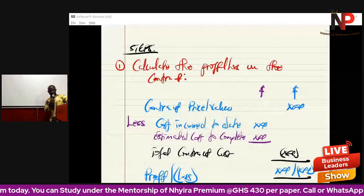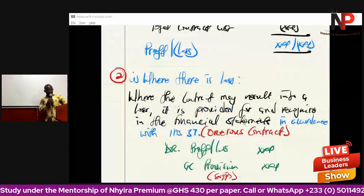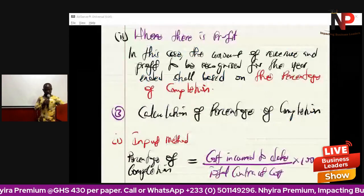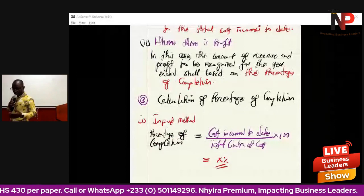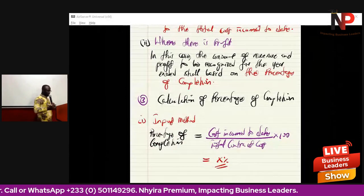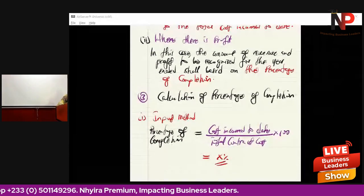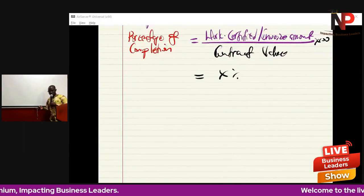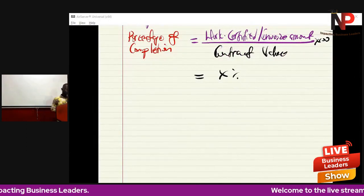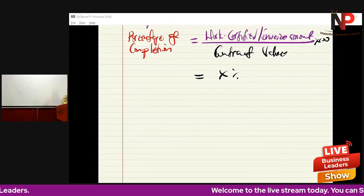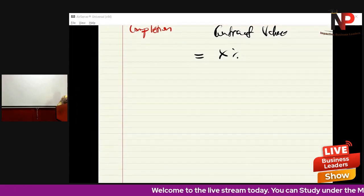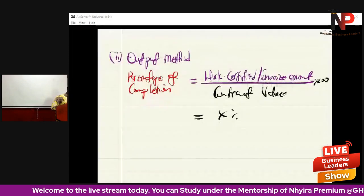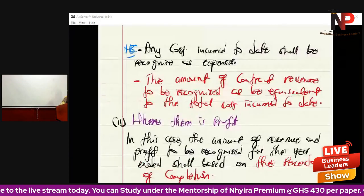Remember, step two determines the profits to be recognized in the financial statements based on the percentage of completion — that is for the statement of financial performance. But we also need to determine how much must be recognized on the face of the statement of financial position. That leads us to step four.